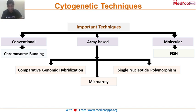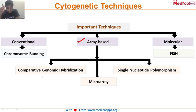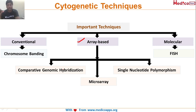Chromosomal banding techniques were the first type of cytogenetic techniques used. Array-based techniques — which include CGH (comparative genomic hybridization), microarrays, and single nucleotide polymorphism arrays — are covered in detail in the Plus course. Now we will look at conventional banding and then move to molecular, that is FISH technology, and cover various types and modifications of FISH.